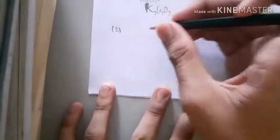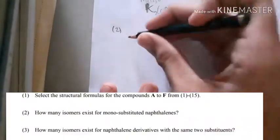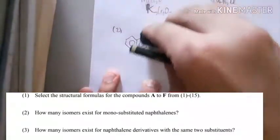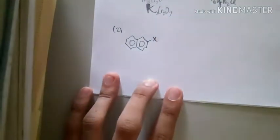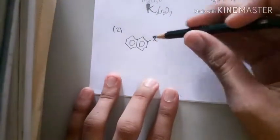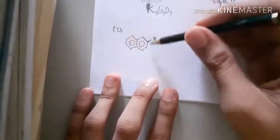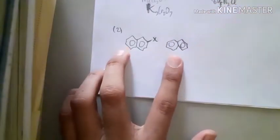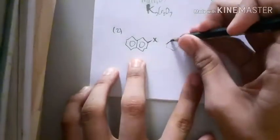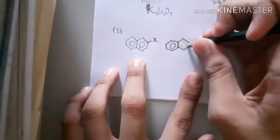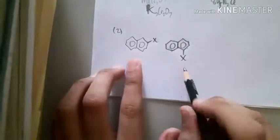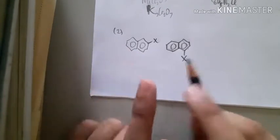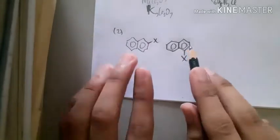Number two: what isomers exist for mono-substituted naphthalene? What it means is you have naphthalene and you have just one substituent X attached to the naphthalene. Isomers means that you can have the same formula for the compound but in a different position — that is called isomers.